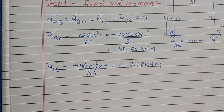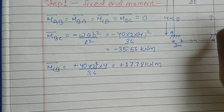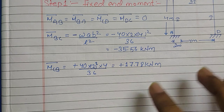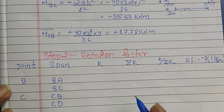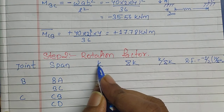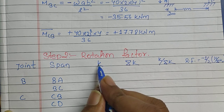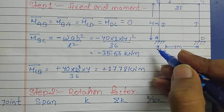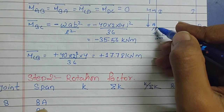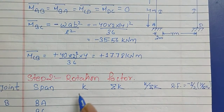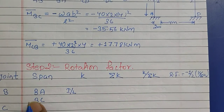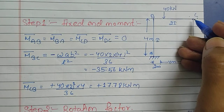In step 2 we find the rotation factor. First we need to determine K, the relative stiffness. There are two formulas for finding K depending on the support type. For span BA, support A is fixed, so the relative stiffness is I/L. For span BC, if the support is a hinge at the center of the beam, it is also I/L.